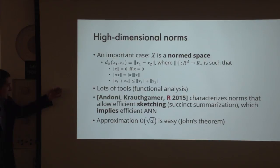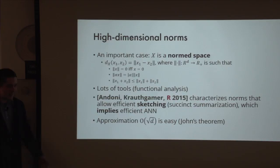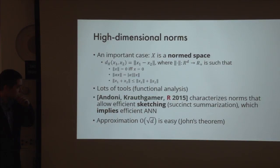For norms you can get at least something non-trivial: you can always get approximation square-root D, where D is your dimension. The way to do it is that any norm is within square-root D of the Euclidean norm, and then you use known results about Euclidean space. For sketching, there is no N—you just have two vectors, compress them, and estimate the distance between them.